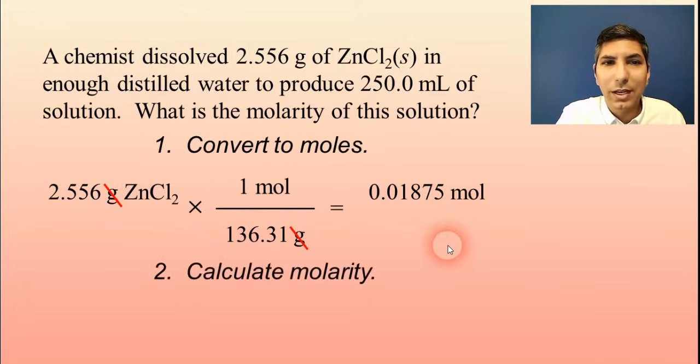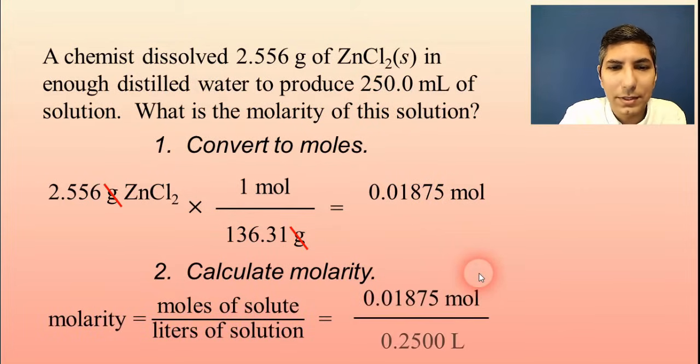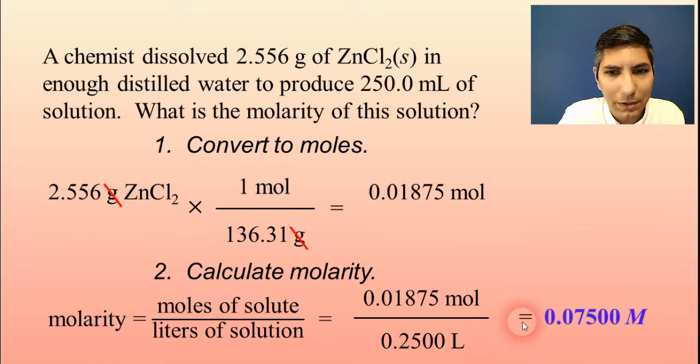The next step is to calculate molarity by taking moles divided by liters. So I have moles. How many liters do I have? Well, move that decimal point three places over, and it's 0.250 liters. So when I divide this out on my calculator, I should get an answer of about 0.0750 molar. So that's how you calculate molarity of a solution.